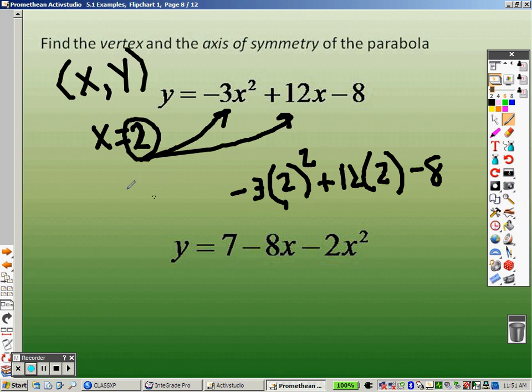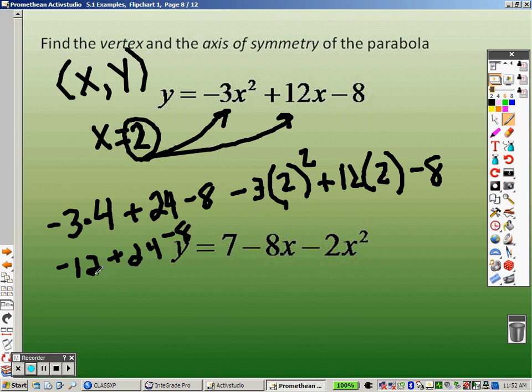So, 2 squared is 4. So this is like saying negative 3 times 4, plus 12 times 2 is 24, minus 8. And that's like saying negative 12 plus 24, minus 8. Well, negative 12 plus 24 is 12, and 12 minus 8 is 4. So now I know what y is, y equals 4.